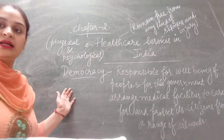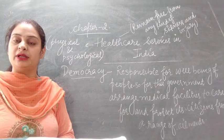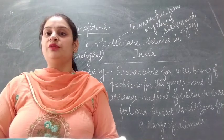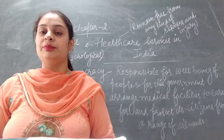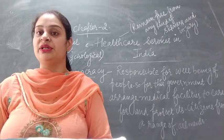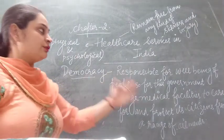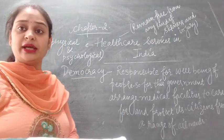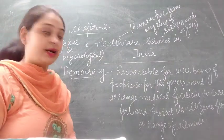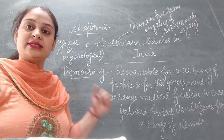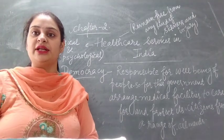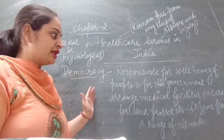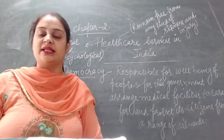As we all know, the democracy of India is responsible for the well-being of people, because the main motive behind a democratic country is taking care of all the different citizens in the society — even if they belong to different castes or different religions. So this is the responsibility of democracy for the well-being of people. For this, the government arranges medical facilities to care for and protect its citizens from a range of ailments. Different medical facilities are provided by the government for the citizens of India.